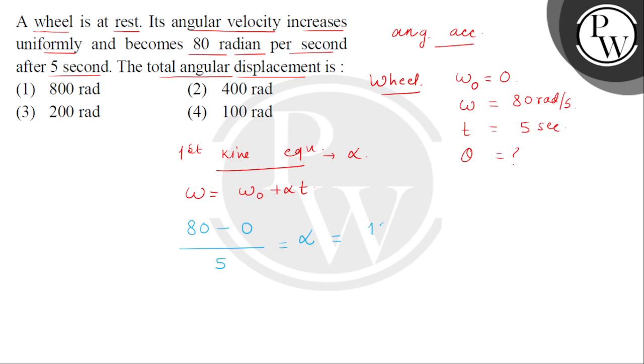Alpha comes out to be 16 radian per second square. Now we can use the second kinematical equation for rotational dynamics, which is theta equals omega naught T plus half alpha T square.